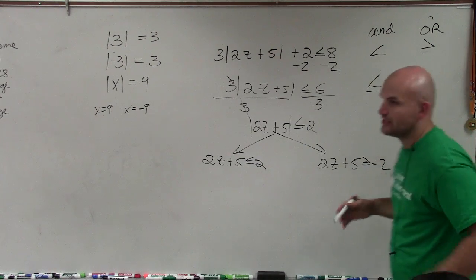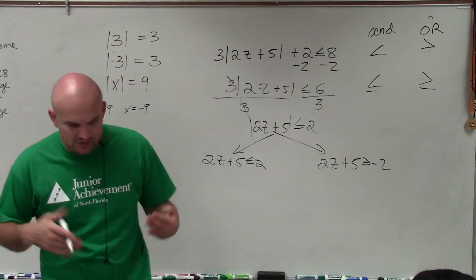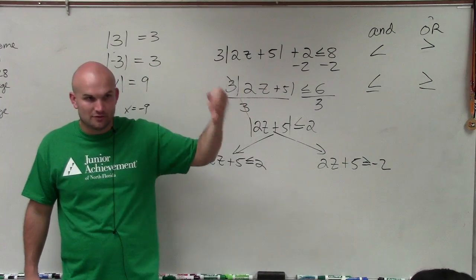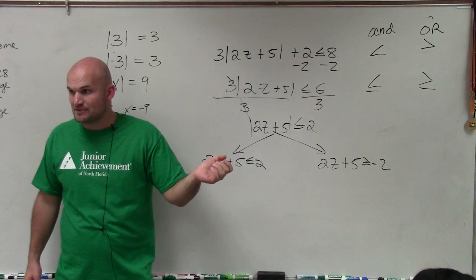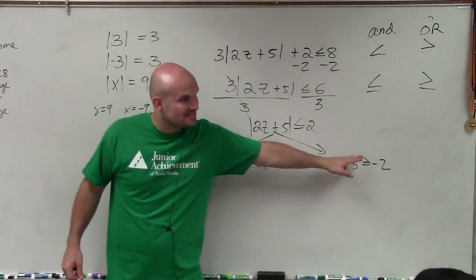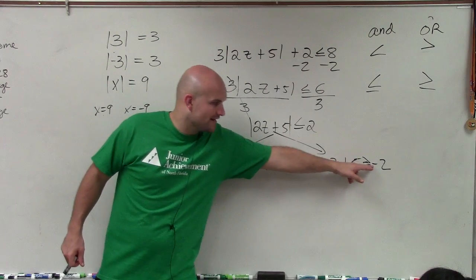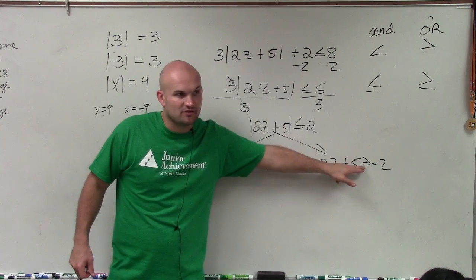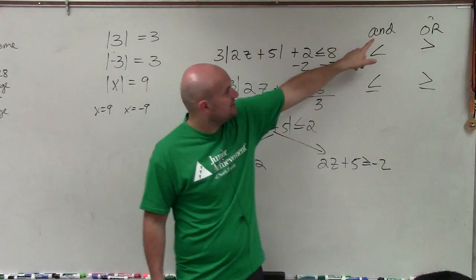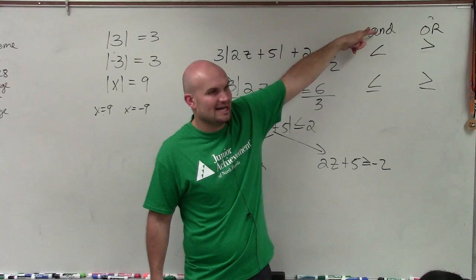on the one we negated, we have to flip the sign. Because for those of you that are solving one variable inequalities and graphing, you guys remember, whenever you multiply or divide by a negative number, what happens with the sign? You have to flip it, right? So if I negate this sign, I got to, or if I negate the other side, I got to make sure I flip the inequality sign, all right?